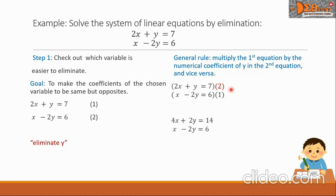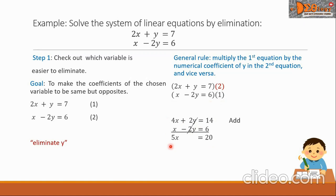Simplifying the equations: 2 times 2x gives 4x, and 2 times y gives 2y, equals 2 times 7 which is 14. The second equation multiplied by 1 remains the same: x minus 2y equals 6. Now let us add the equations. We have positive 2y and negative 2y, which cancel out. Adding 4x plus x gives 5x, and on the right side 14 plus 6 equals 20.